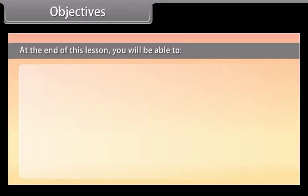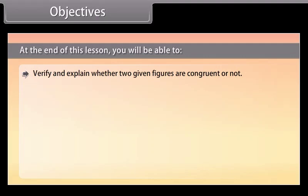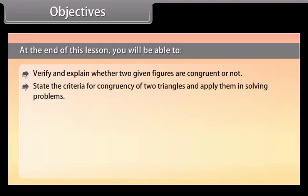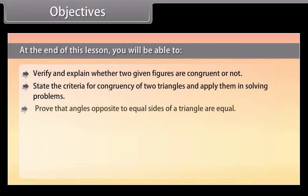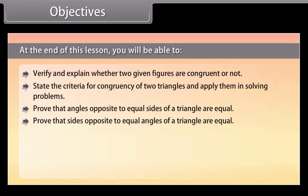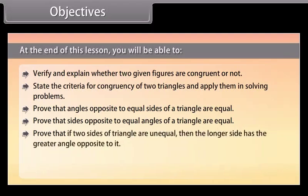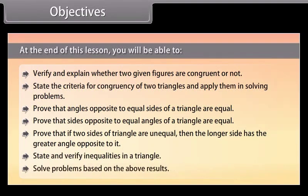At the end of this lesson, you will be able to: verify and explain whether two given figures are congruent or not; state the criteria for congruency of two triangles and apply them in solving problems; prove that angles opposite to equal sides of a triangle are equal; prove that sides opposite to equal angles of a triangle are equal; prove that if two sides of a triangle are unequal, then the longer side has the greater angle opposite to it; state and verify inequalities in a triangle; and solve problems based on the above results.